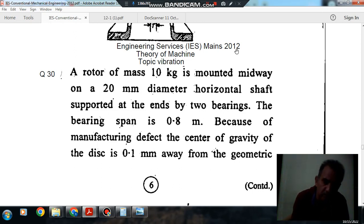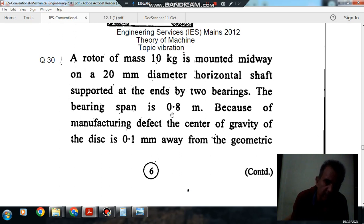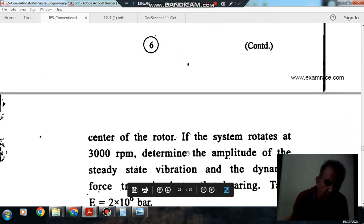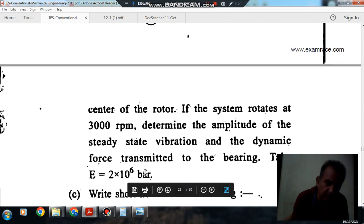Question number 30 from Engineering Services May 2012: A rotor of mass 10 kg is mounted midway on a 20 mm diameter horizontal shaft supported at the ends by two bearings. The bearing span is 0.8 m. Because of manufacturing defect, the center of gravity of the disk is 0.1 mm away from the geometric center of the rotor. If the system rotates at 3000 rpm, determine the amplitude of steady state vibration and dynamic force transmitted to the bearing. Take E = 2×10^6 bar.